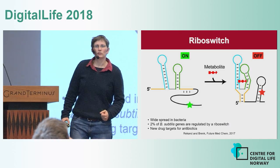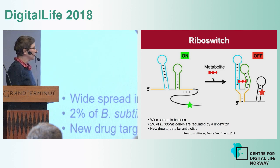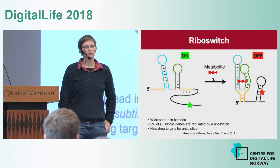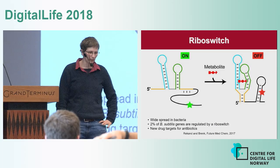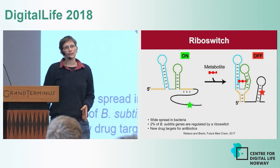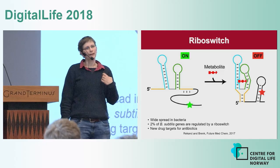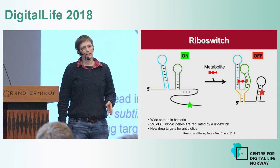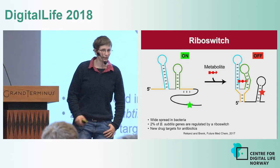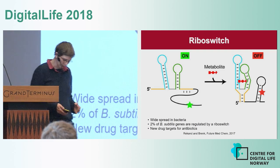Riboswitches are relatively widespread in bacteria. It's believed that about two percent of the genes in Bacillus subtilis, for example, are regulated by a riboswitch. Since we can influence gene expression by binding of small molecules, riboswitches are believed to be interesting targets for antibiotics — that's why we are interested in targeting them to develop new antibiotics.